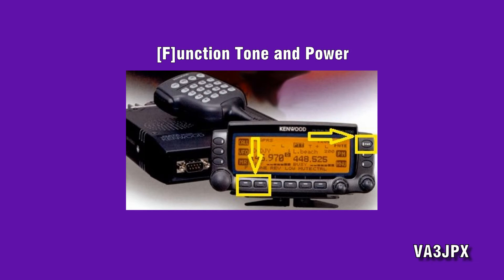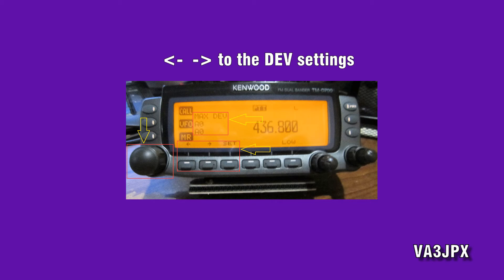Step number two: on the D700 remote head, hold down the first two buttons on the lower left — that's the function and the tone — as well as the power button. So you're going to hold down those three buttons. The radio will then power up into the alignment menu.